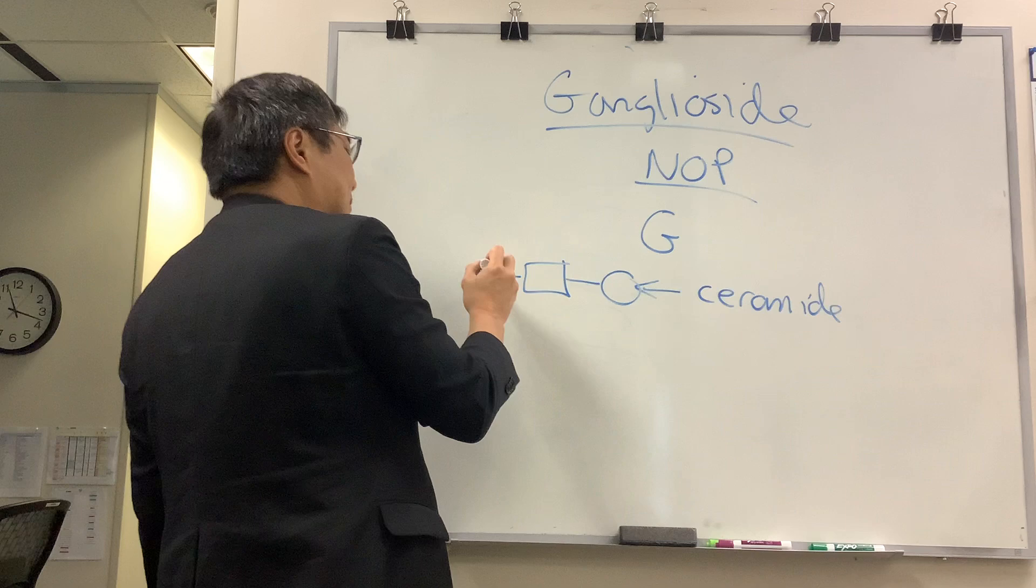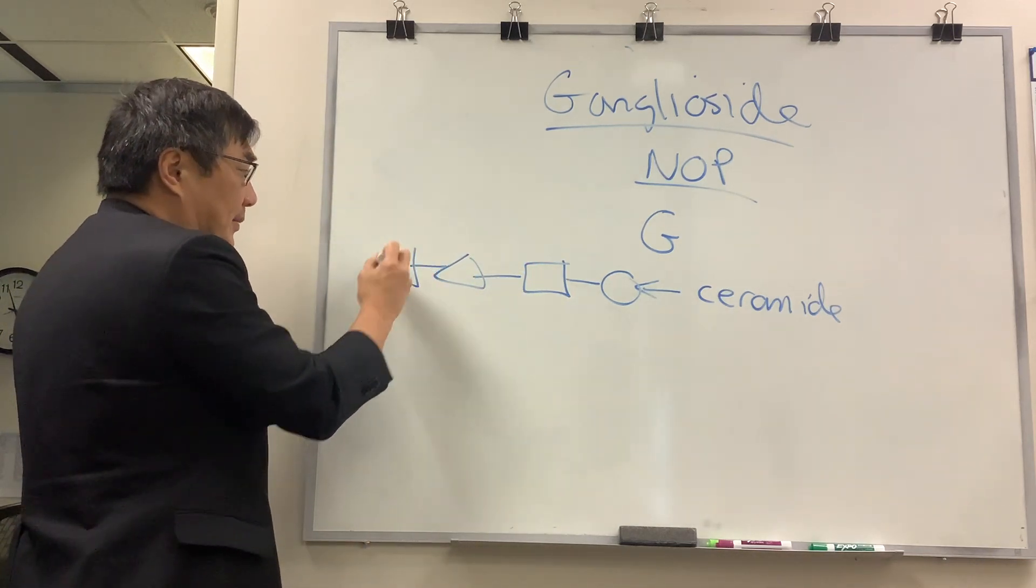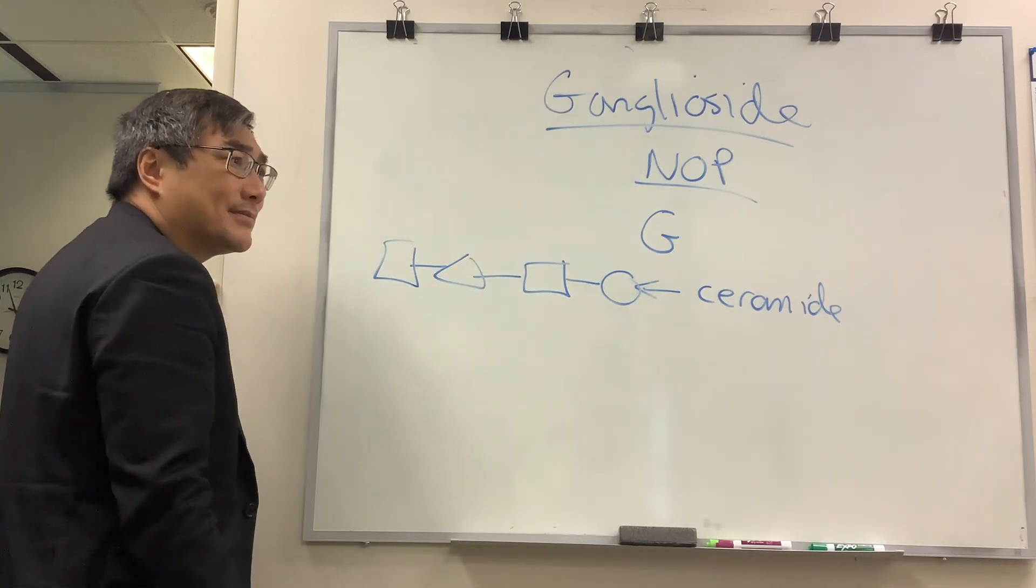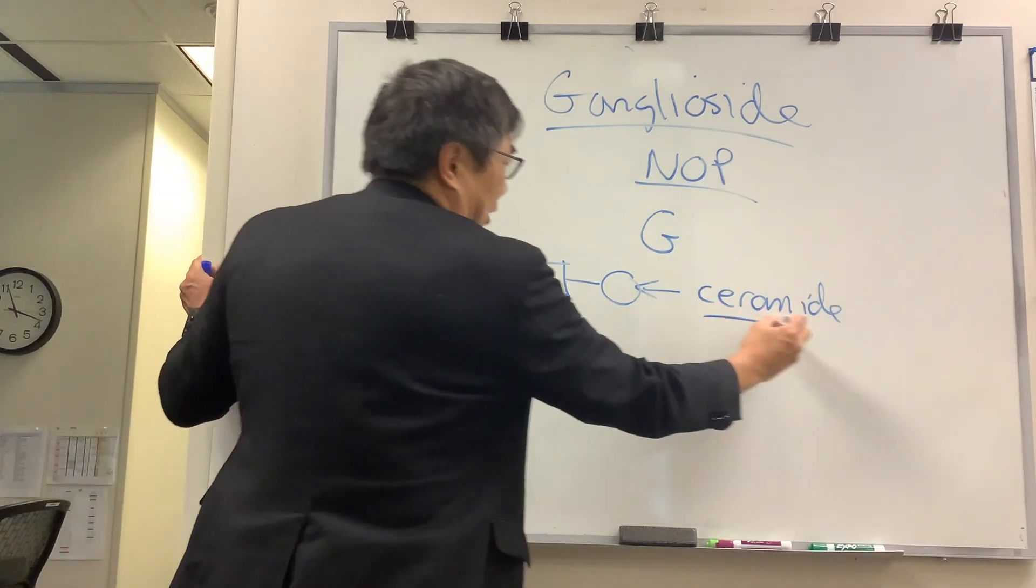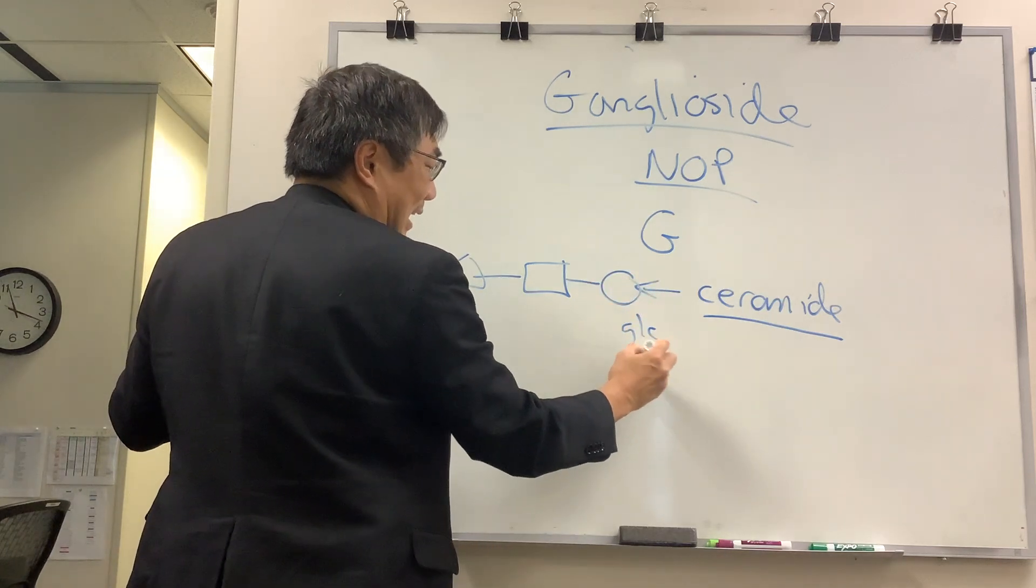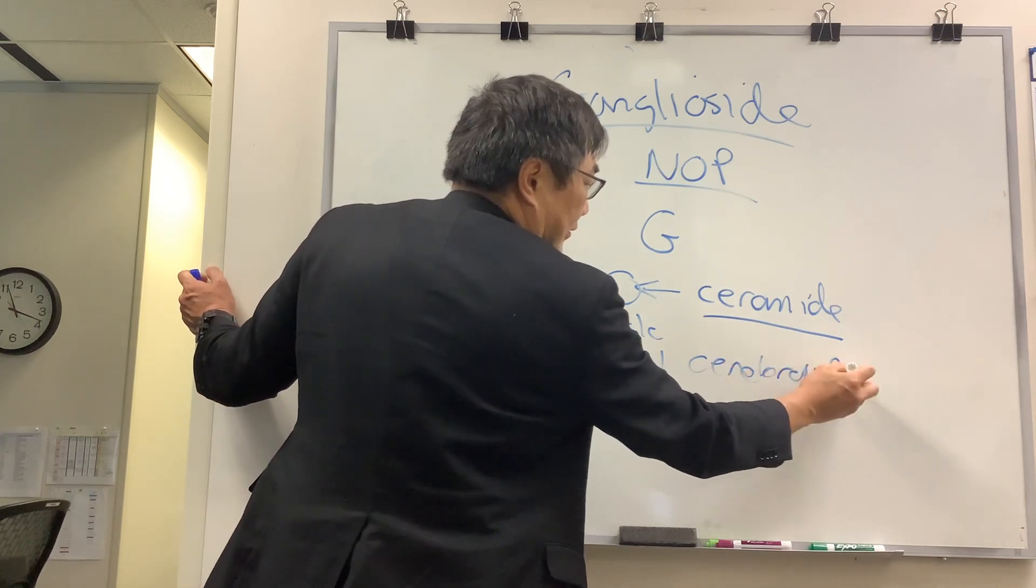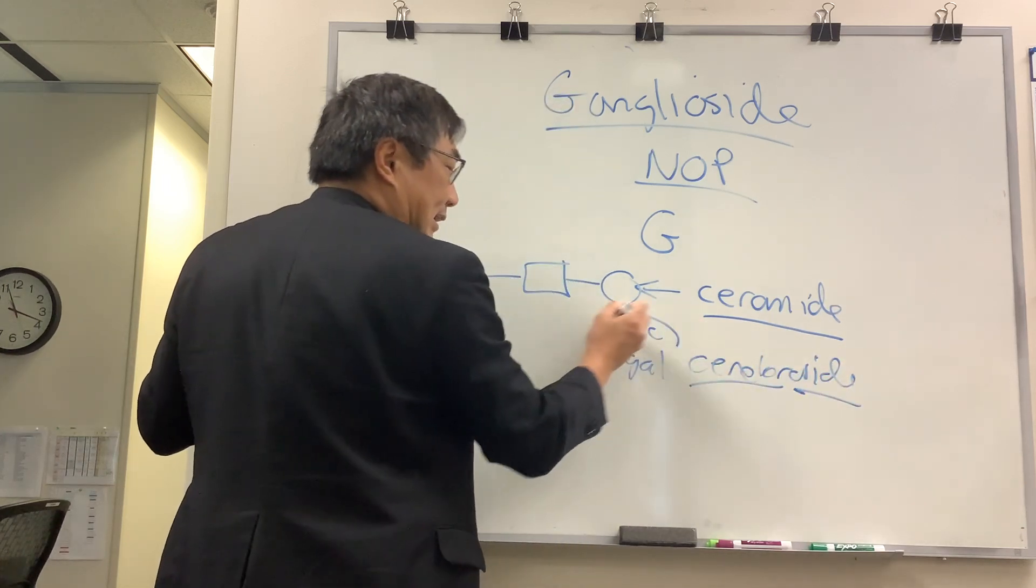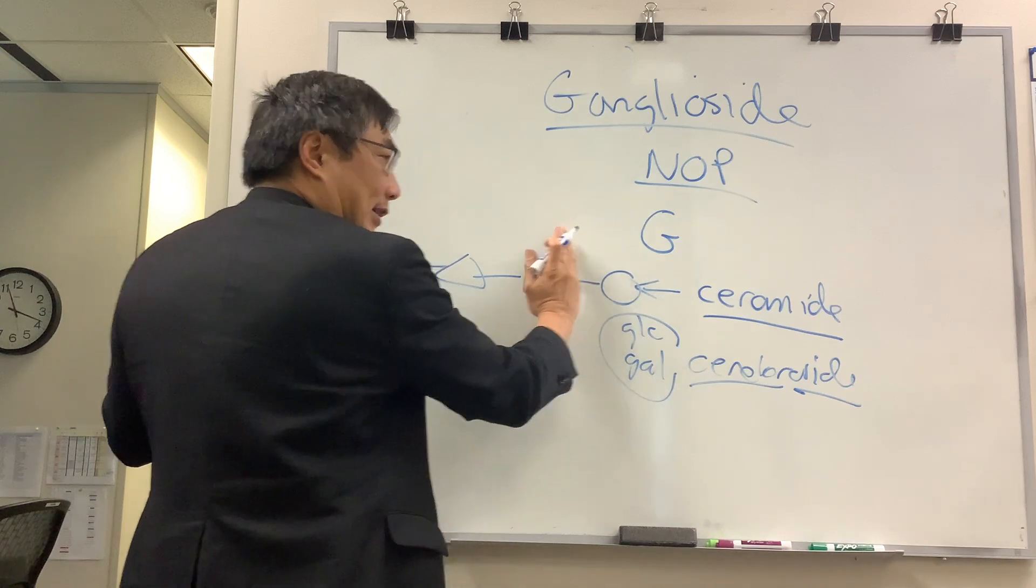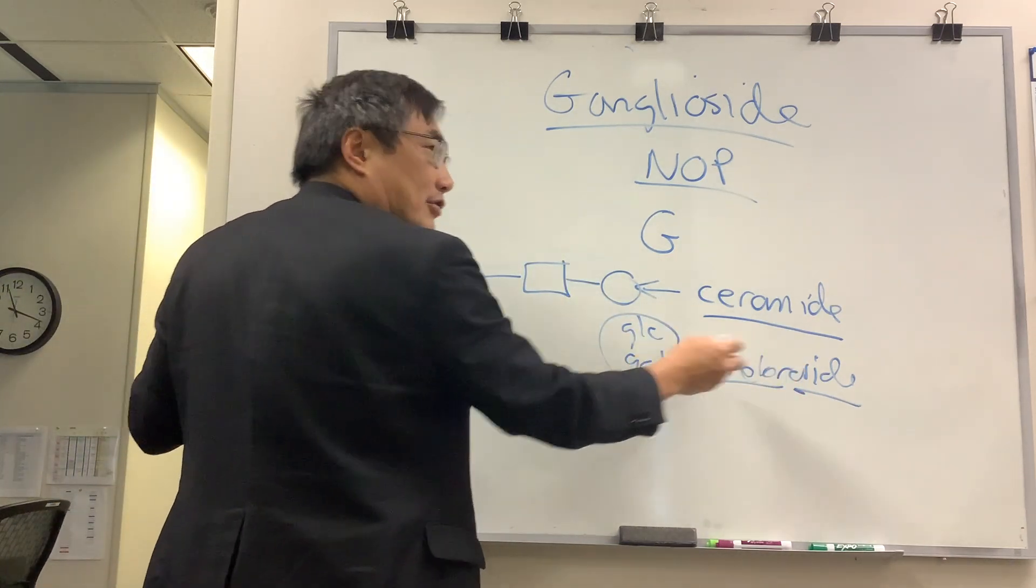That series of sugars is what determines the name of the ganglioside. When you have the ceramide plus a single sugar like glucose or galactose, we call that a cerebroside. So the side chain is a single sugar monosaccharide. Those would be glucocerebroside or galactocerebroside.